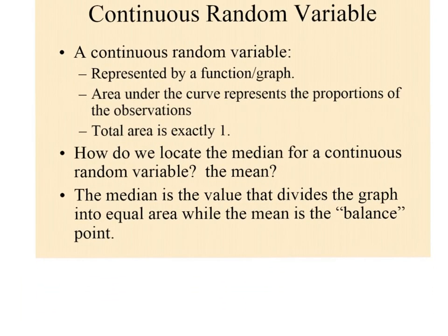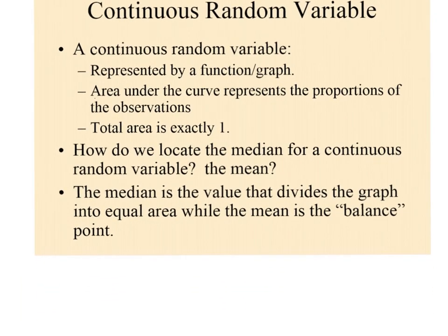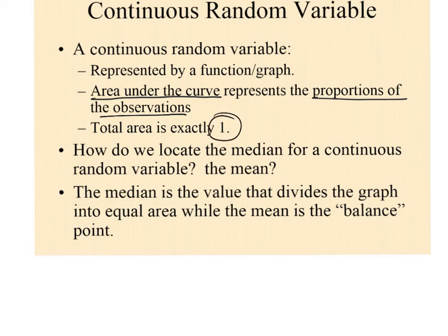Here are things you need to know: the area under the curve represents all of the observations. The probability of all that data is 1, or 100%. Also, for the normal curve, the mean and the median are located at the same spot — because it's symmetric, right there in the middle.